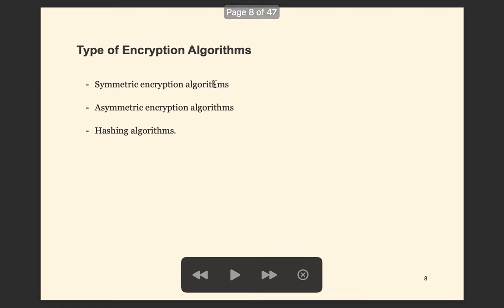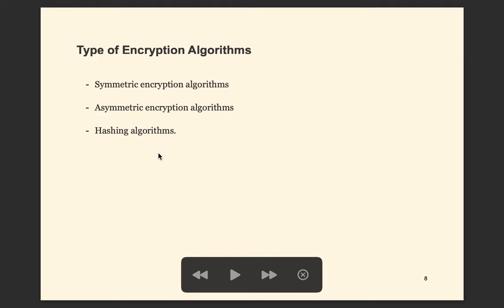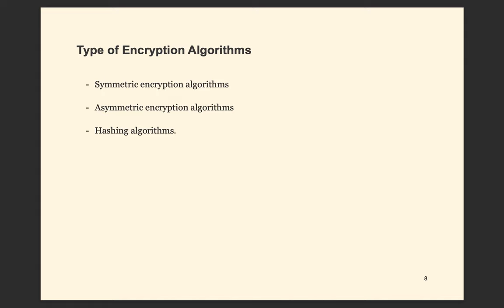The encryption algorithm has three different types. The first type is called the symmetric encryption algorithm. The second is called the asymmetric encryption algorithm. And the third is the hashing algorithm. So let's take a look at each of them.